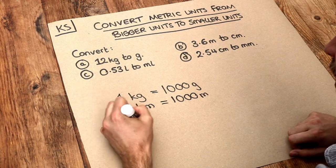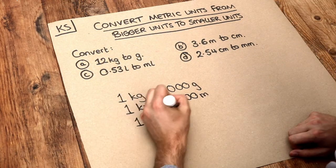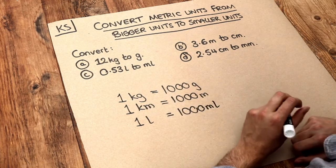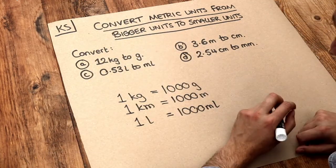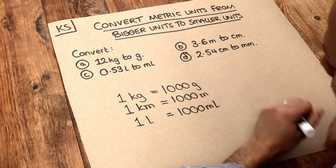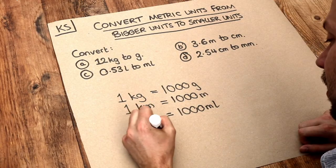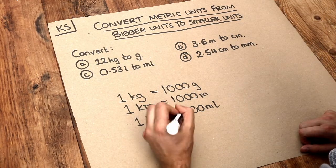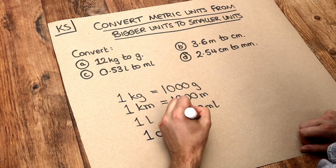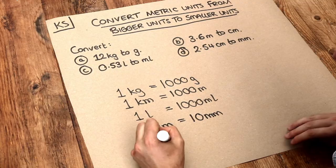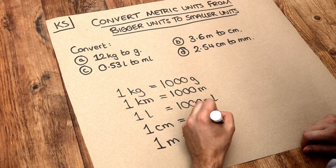Then we also have one litre is equal to a thousand millilitres. Litre is a unit of capacity, that is how much space something takes up. You could use that for milk, for example, I might say I have two litres of milk. Then we've also got centimetres to millimetres, so one centimetre is ten millimetres. And then we've also got one metre is a hundred centimetres.